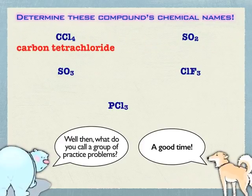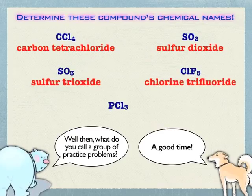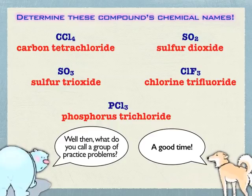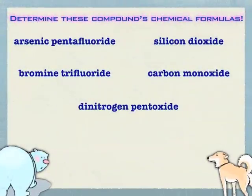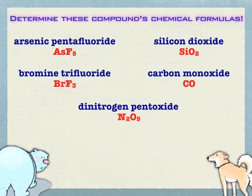Let's look at some practice problems. Carbon tetrachloride: one carbon, four chlorines. Sulfur dioxide: one sulfur, two oxygens. Sulfur trioxide. Chlorine trifluoride — remember, if the first element is a typical anion, you still don't make it -ide; it becomes chlorine trifluoride and the -ide only belongs to the element at the end. Phosphorus trichloride. Going the other way: arsenic pentafluoride — five fluorines. Silicon dioxide is SiO2. Bromine trifluoride. Carbon monoxide. Nitrogen pentoxide. They're very, very simple.